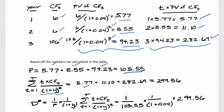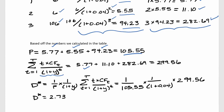Now we just have to put all these numbers into the modified duration formula. We've got one over the price — which we calculated as 105.55 — times one over one plus the current market yield of four percent, then multiply by 299.56. When we plug all that into the calculator we get a modified duration of 2.73.